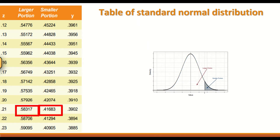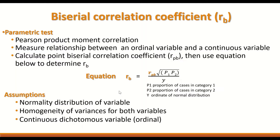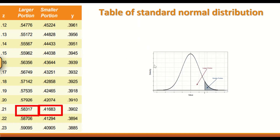A table of the standard normal distribution will be used in this test to work out the Y ordinate. P1 and P2 can be calculated from the data, and I will show you shortly how to do that. Once you obtain proportion one and proportion two, use the standard normal distribution table to find the Y ordinate for the large proportion and small proportion.